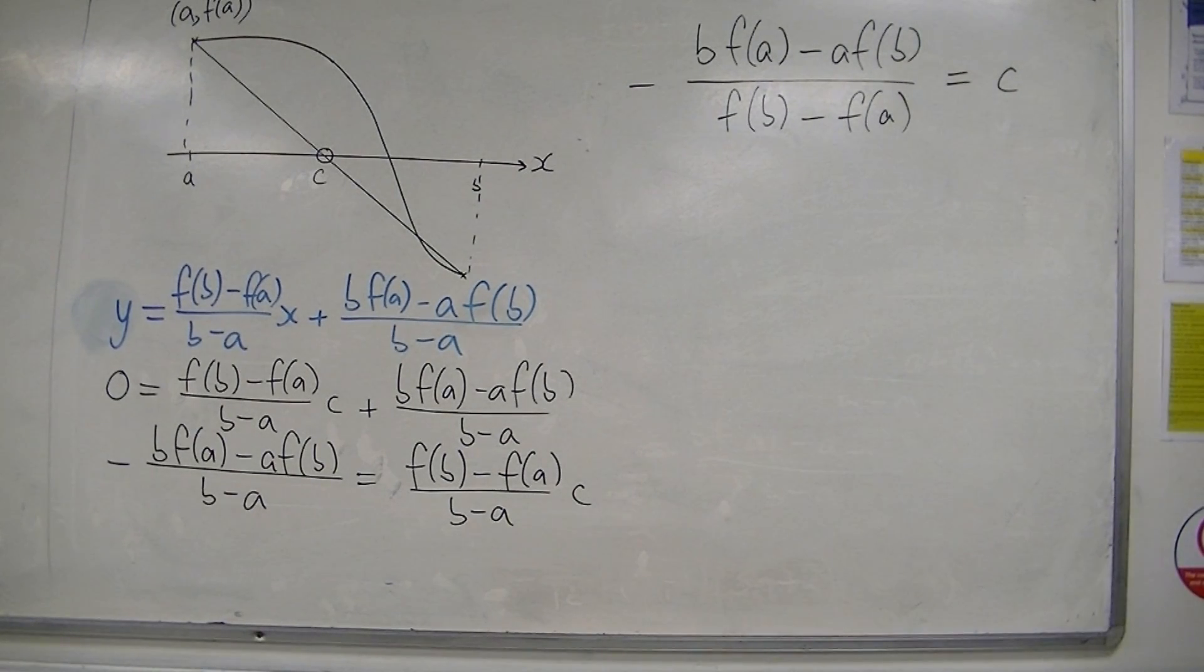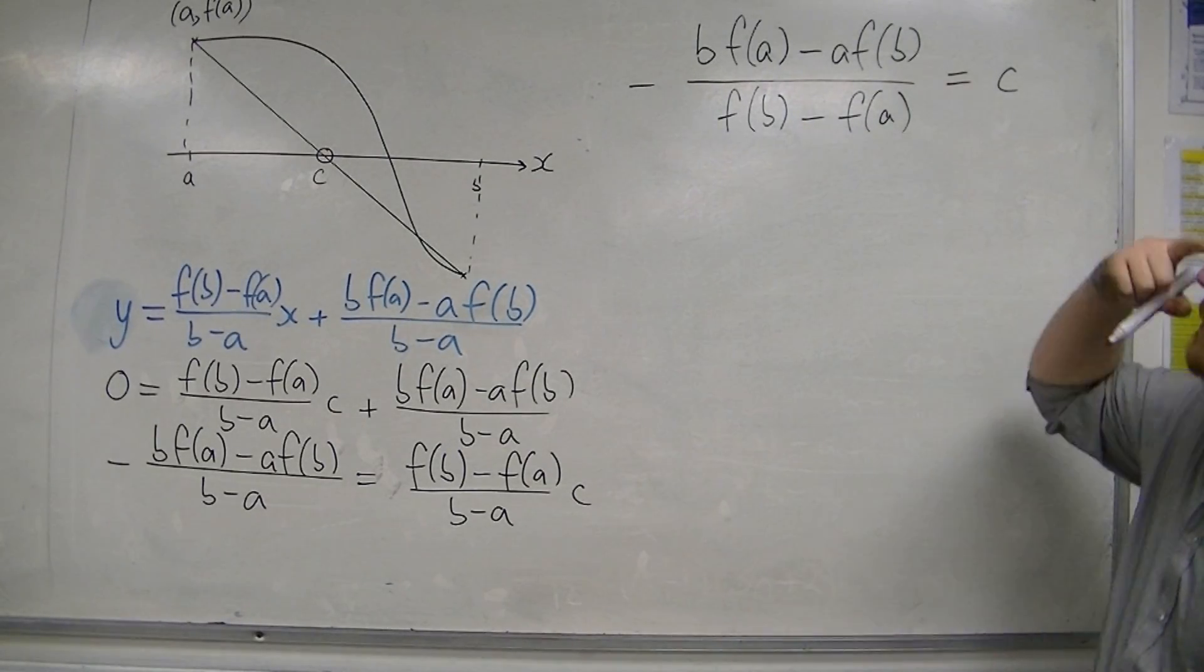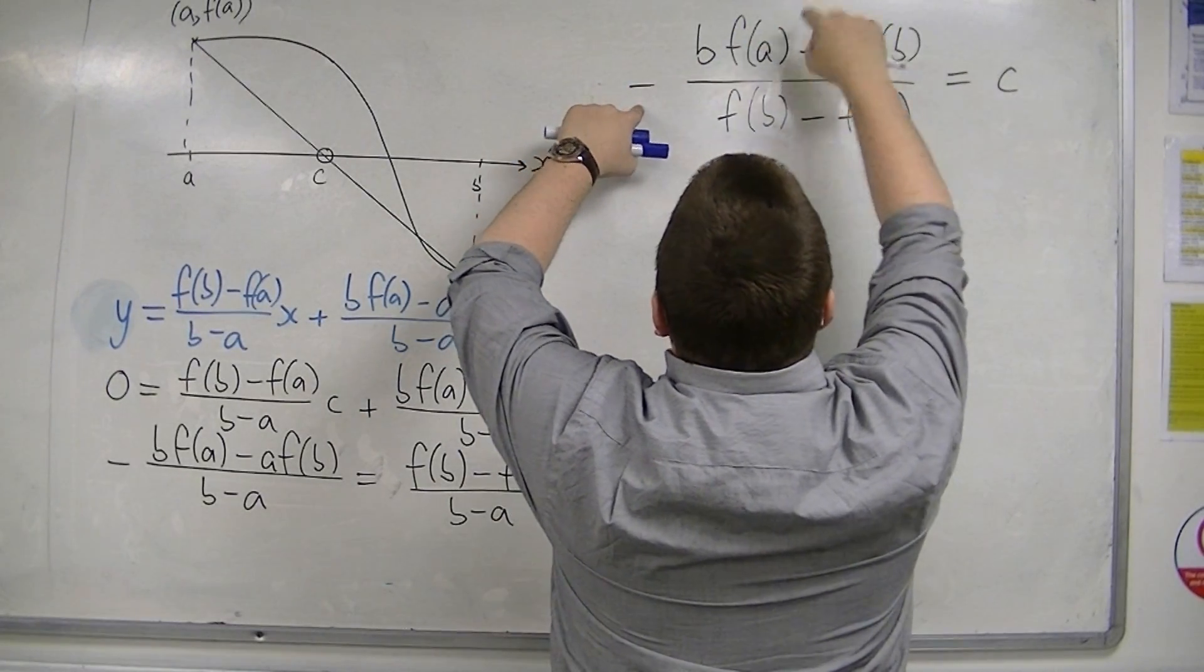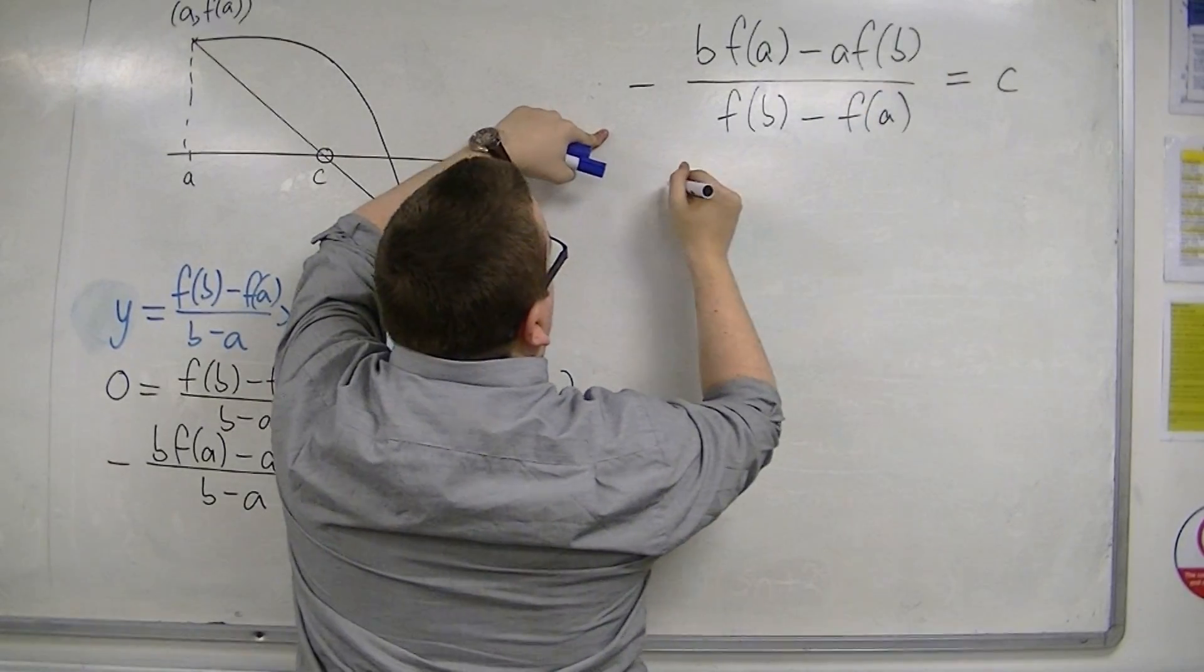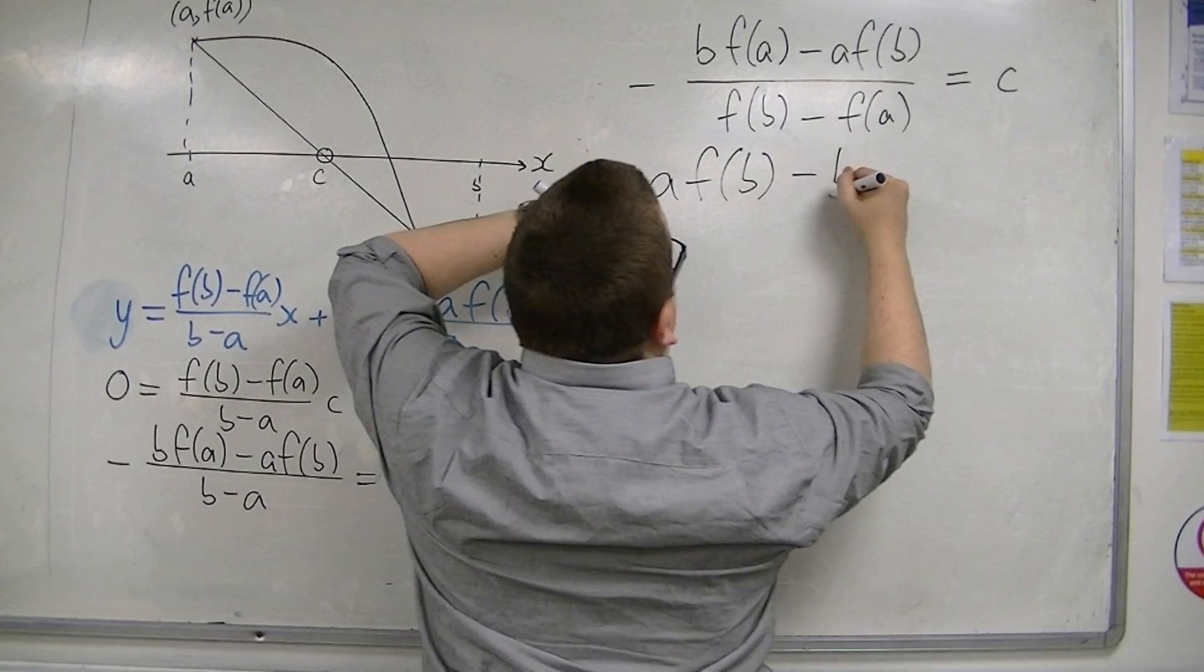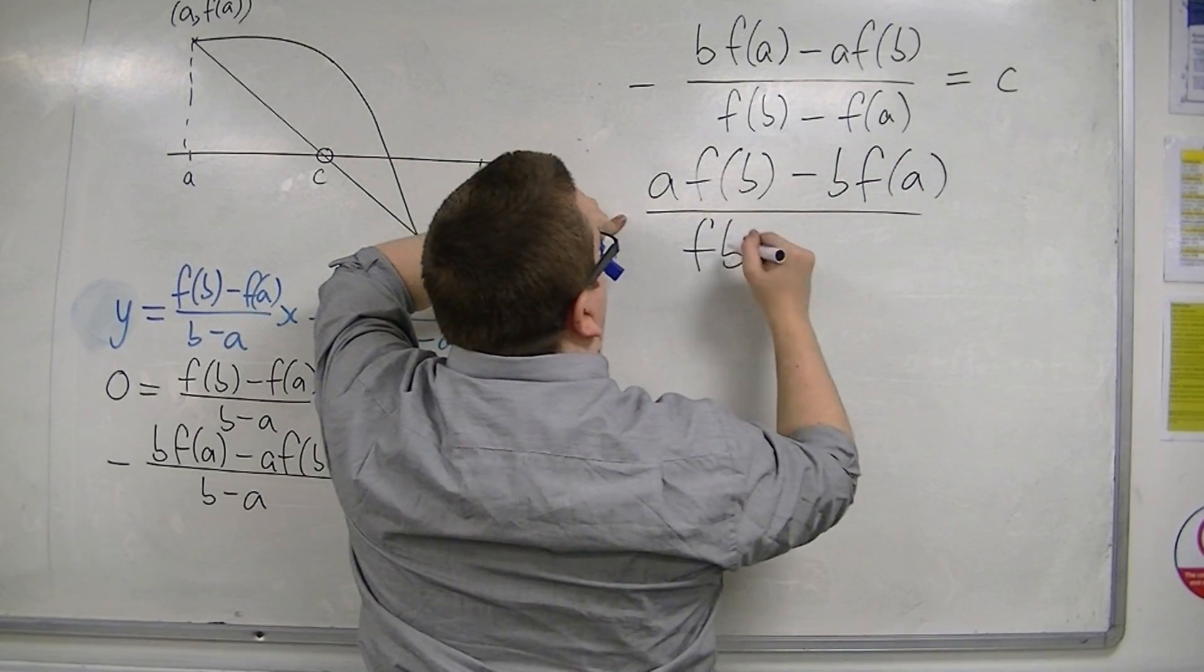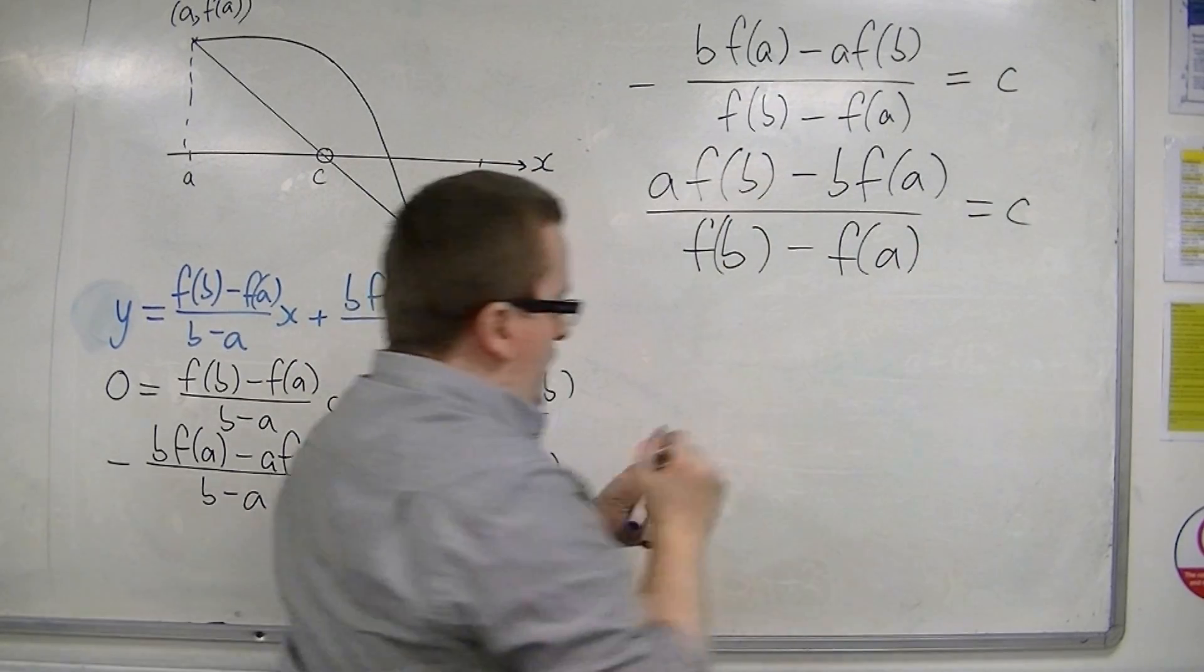Okay. Now, that minus sign can be brought inside. And that will allow me to reverse these two. So, I'm going to have minus b·f(a) minus minus a·f(b). So, I can write it in this way: [a·f(b) - b·f(a)]/[f(b) - f(a)]. And that's going to be my value of c.